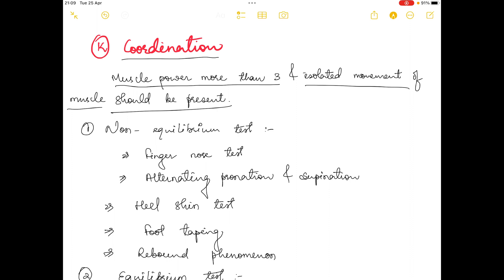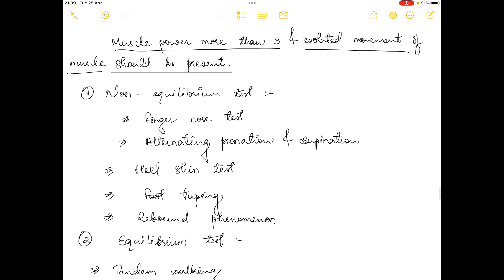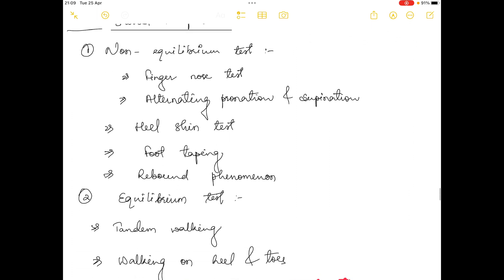In order to assess coordination, there are two methods: non-equilibrium test and equilibrium test. There are various kinds of tests that come under non-equilibrium tests, some of them are finger-nose test, alternating pronation and supination, heel-shin test, foot tapping, and rebound phenomenon.